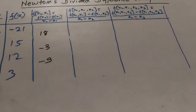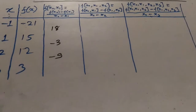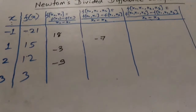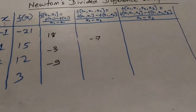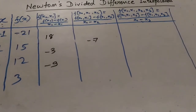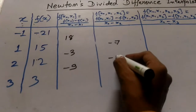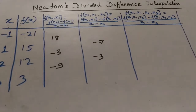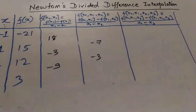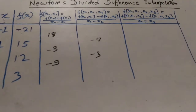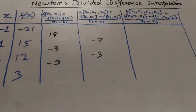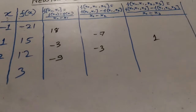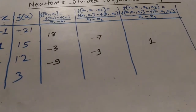For the second column, the first term is minus 7, that is (18 minus (minus 3)) divided by (minus 1 minus 2). The last term of this column is minus 3, that is ((minus 3) minus (minus 9)) divided by (1 minus 3). For the last column, the single term is 1, that is ((minus 7) minus (minus 3)) divided by (minus 1 minus 3).